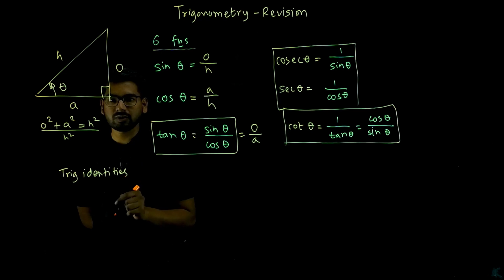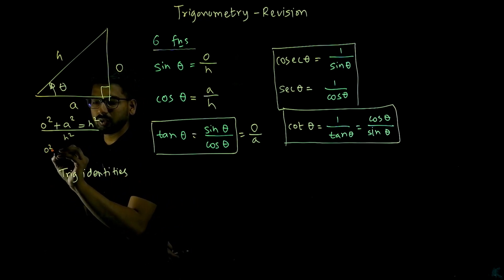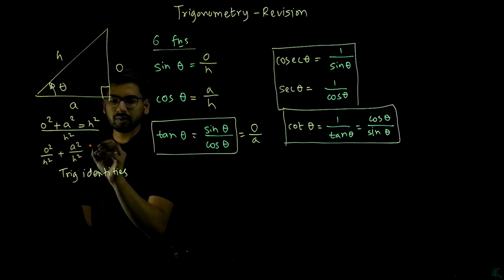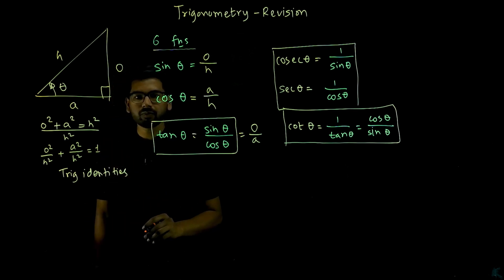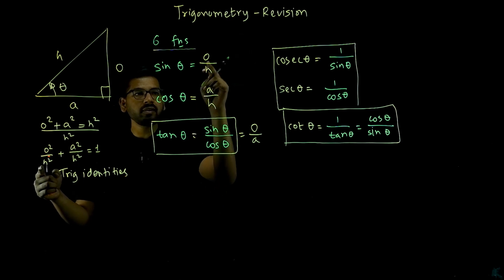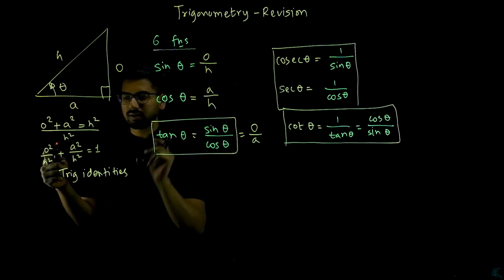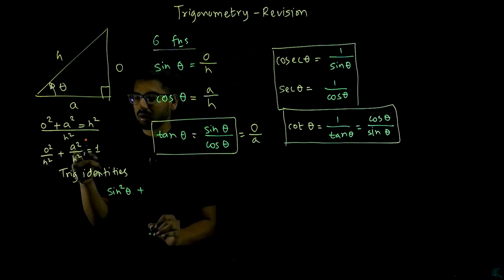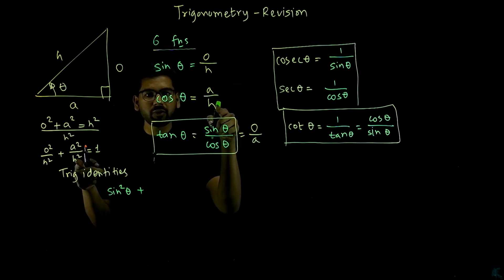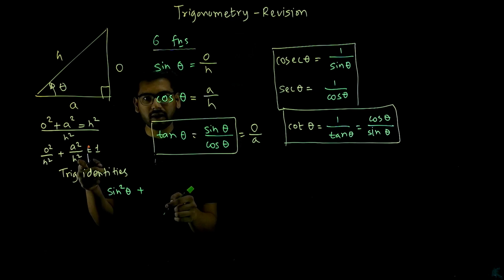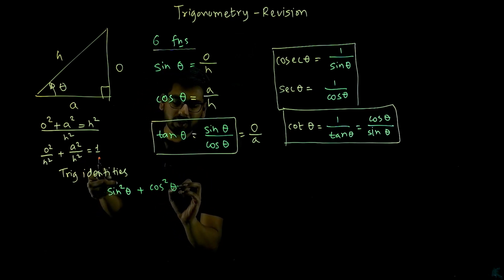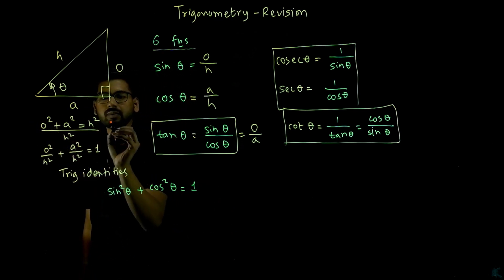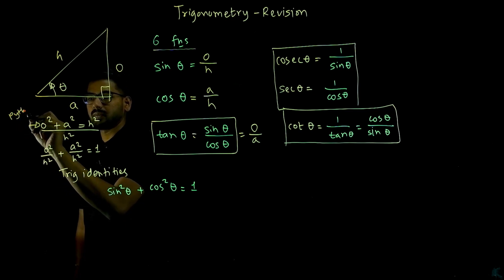If you divide each term of that equation by hypotenuse squared, you get: opposite squared over hypotenuse squared, plus adjacent squared over hypotenuse squared, equals one. Now, opposite over hypotenuse is sine theta, so opposite squared over hypotenuse squared is sine squared theta. And adjacent over hypotenuse is cos theta, so adjacent squared over hypotenuse squared is cos squared theta. This equals 1.